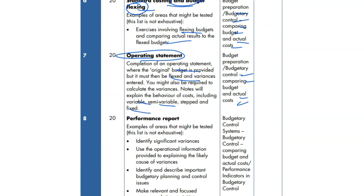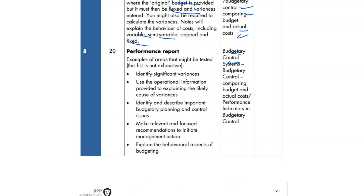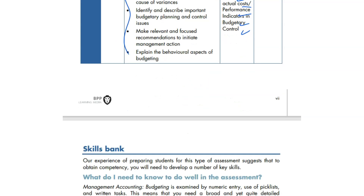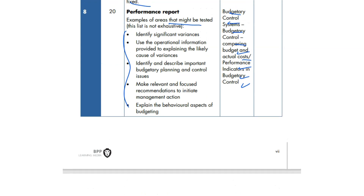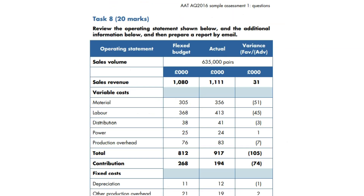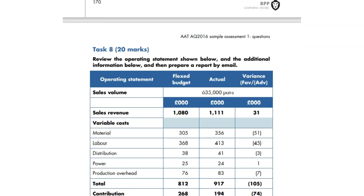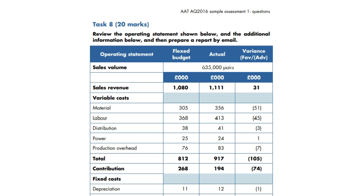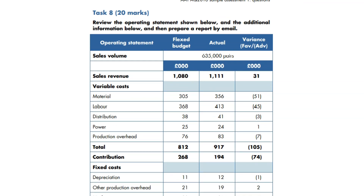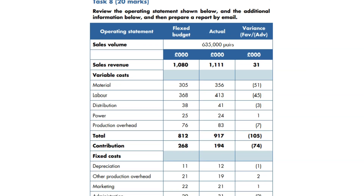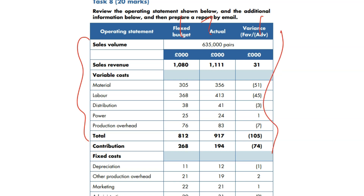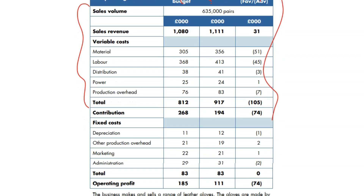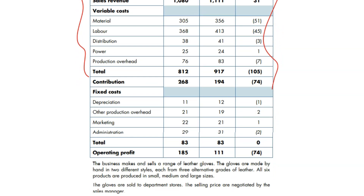Moving to question number 8: it's a theory writing question on budgetary control systems, comparing budgets, actual performance indicators. Examples and areas might be tested. This is an explanation-type question requiring you to extract relevant information from the scenario and apply it to specific requirements worth 10 marks, 5 marks, and 5 marks. Many students struggle a little with writing, so here are a few things you need to memorize.